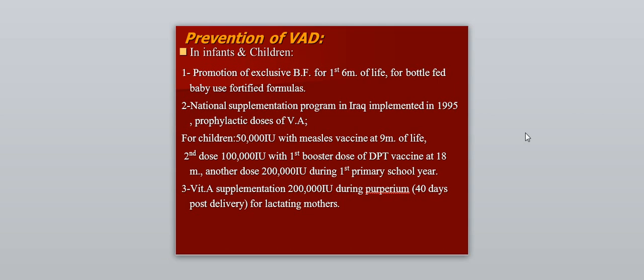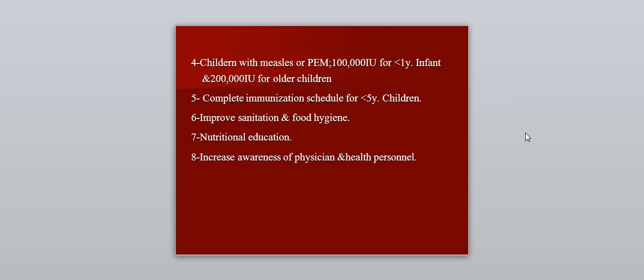Vitamin A supplementation should also be given during the puerperium — 40 days after delivery — in a dose of 200,000 international units, and for lactating mothers immediately after delivery. Children with measles or protein energy malnutrition under one year should receive 100,000 international units; those over one year should receive 200,000 international units. Complete immunization, improved sanitation, food hygiene, and nutritional education are also important for prevention.